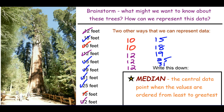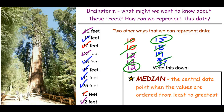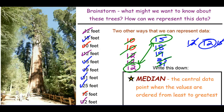To find the median, we start crossing off values from the largest and smallest ends to find the number literally in the center. We remove 10 and 31, then 25 and 10, then 19 and 12, then 18 and 12. We're left with two data points: 12 and 15. Since we have 10 data points, there's no single central number, so we find the middle value between 12 and 15, which is 13.5. That is our median.